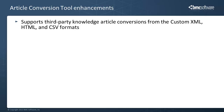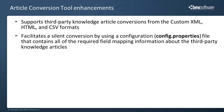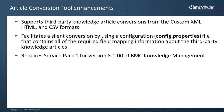The article conversion tool supports a new mode that enables you to convert third-party knowledge articles from the custom XML, HTML, and CSV formats. The conversion runs silently by using a configuration file that you supply at the start of the conversion process. The configuration file contains parameters that are used to map information in the source files to fields in BMC Knowledge Management. Note that this functionality requires at least version 8.1.01 of BMC Knowledge Management.